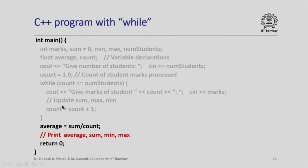After reading all students' marks and computing the aggregates, we compute average as sum divided by count. Since sum is an integer and count is declared as float, sum divided by count yields a float, allowing us to retain any fractional part. This is why count was declared as type float. Average is of course of type float, and once computed we print average, sum, min, and max, then return control to the operating system.